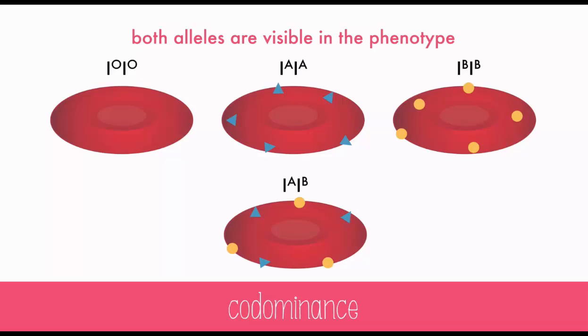The alleles are written as capital letters with sub- or superscripts for the different alleles. This is how blood type is written, assuming that everything is homozygous except for the AB blood type.